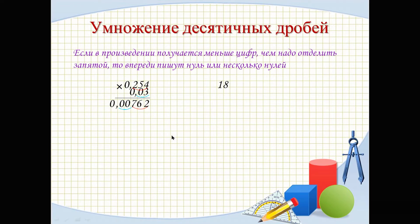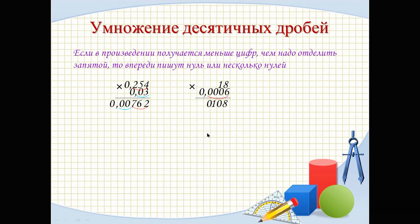Next example: 18 × 0.06. We get: 6 × 8 = 48, write 8, carry 4. 1 × 6 = 6, plus 4 = 10. Result: 108. We count the decimal places — 2 digits after the decimal point. But our number has only 3 digits, so we add a zero. We count from the right and place the decimal point, writing 0 at the start. Result: 0.0108.